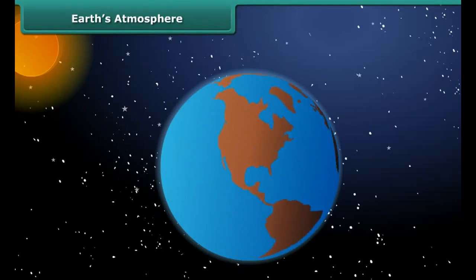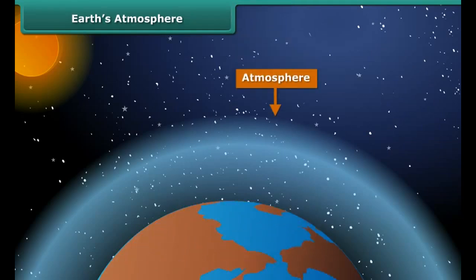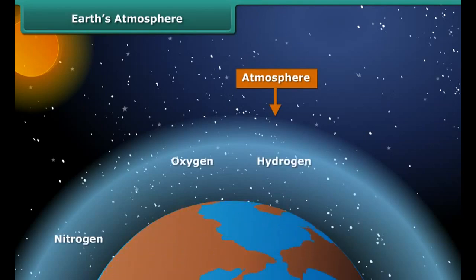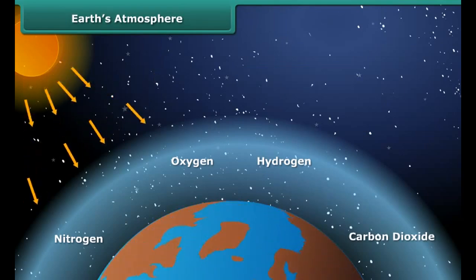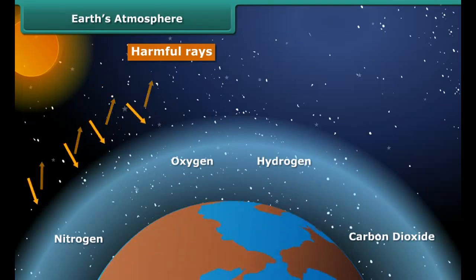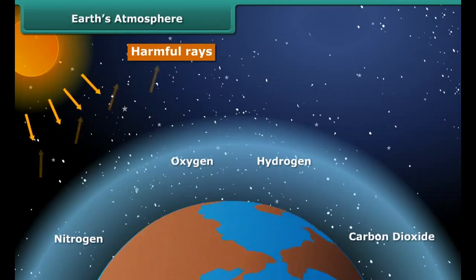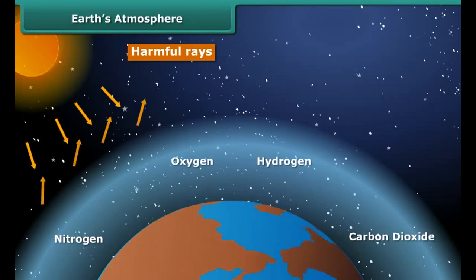Our Earth is surrounded by a blanket of several gases called the atmosphere. This atmosphere contains mainly nitrogen, oxygen, hydrogen, and carbon dioxide, along with some other gases. The atmosphere protects us from harmful rays from the Sun and plays a very important role in regulating the temperature of Earth to sustain life on it.